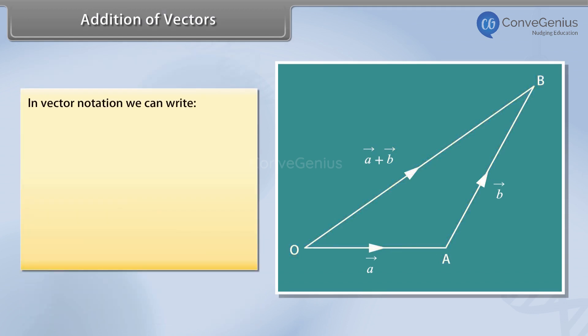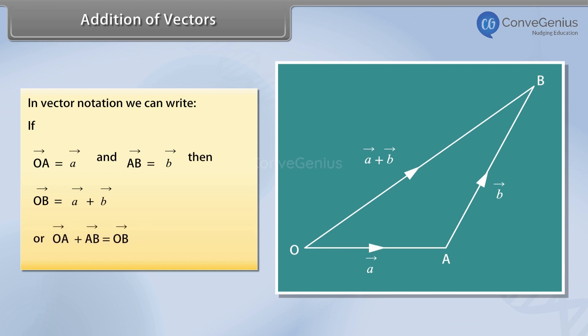In vector notation, we can write: if vector OA equals vector A and vector AB equals vector B, then vector OB equals vector A plus vector B, or vector OA plus vector AB equals vector OB.